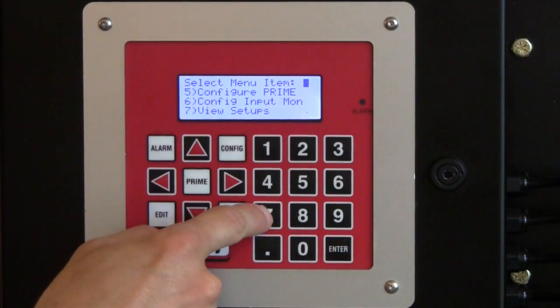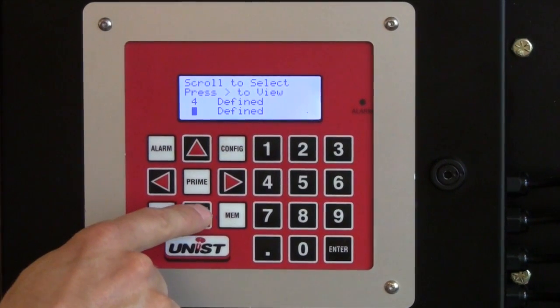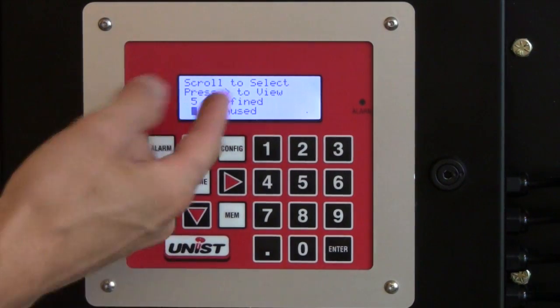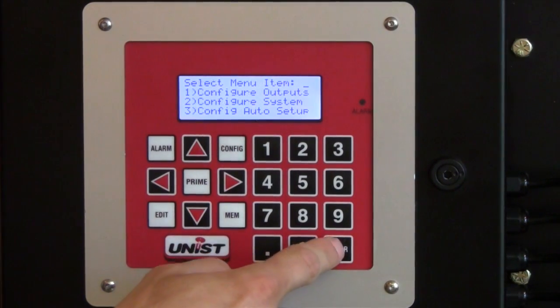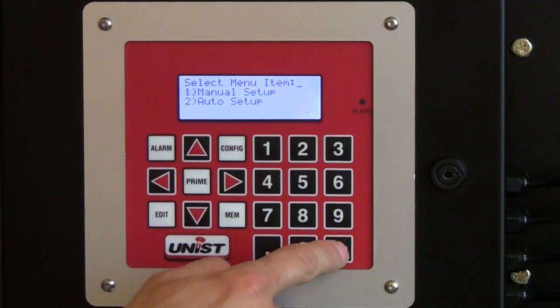Choose option number seven which allows you to view the setups. And we can see that jobs one through five are already defined. Job number six is the next unused. So if we go to edit from there and call up job number six which is the next open job.